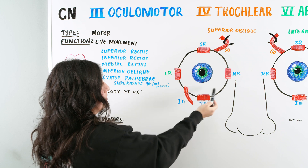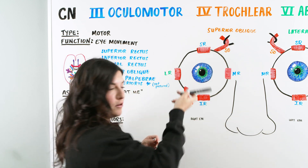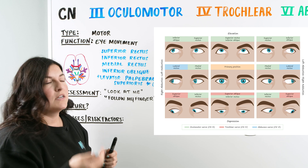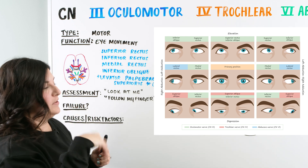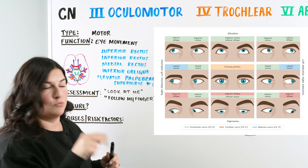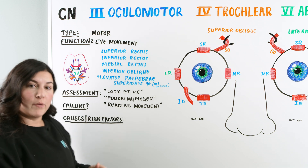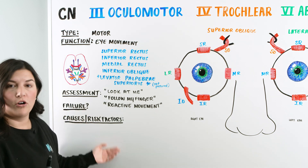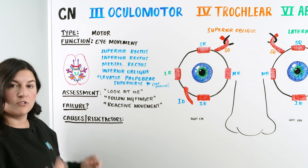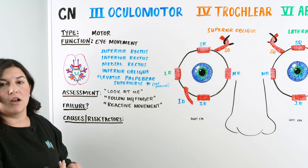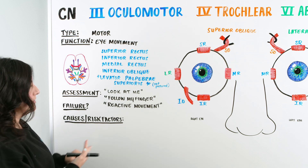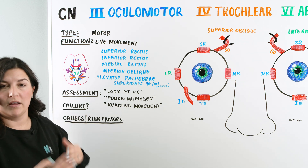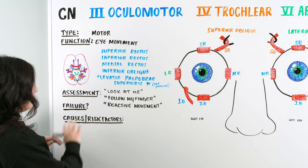For example, the right eye is going to be using the medial rectus to look to the left, while the left eye would be using the lateral rectus. The last assessment is asking the patient to look at you and then look left, back at you, look right, back at you, look up, back at you, and look down — assessing to see if they have reactive movement. If there are any failure issues with the assessment, we investigate causes and risk factors: trauma to the area, nerve issues, compression, inflammation or infection, or possibly demyelination of the nerve sheath. Overall, these risk factors are typically always the same.